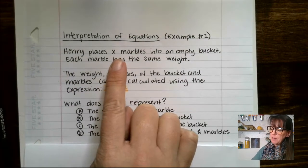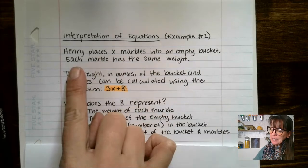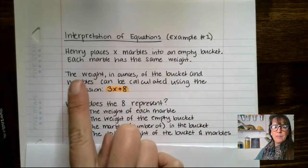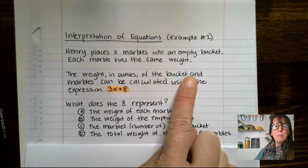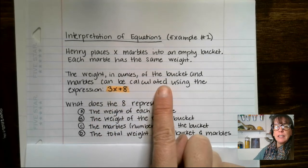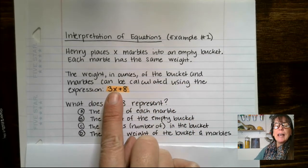Henry places x marbles into an empty bucket. Each marble has the same weight. The weight in ounces of the bucket and marbles can be calculated using the expression 3x plus 8.